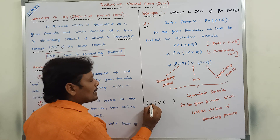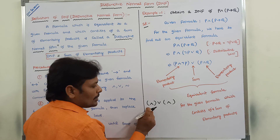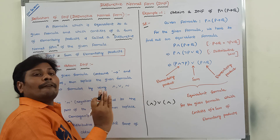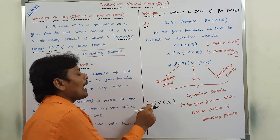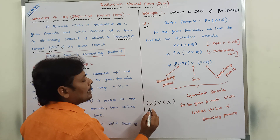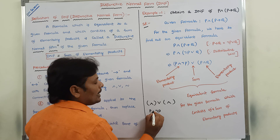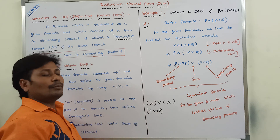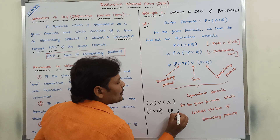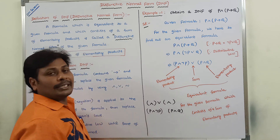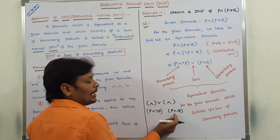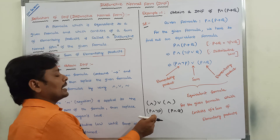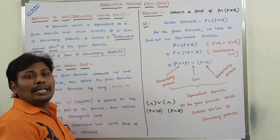An elementary product is nothing but variables connected by conjunction (AND) connectives. The AND connective is there in between the variables and their negations, and then it can be called as one elementary product. For example, P and ¬P — these two are connected by using the AND connective, so this is called as one elementary product. Similarly, P and Q — these two variables are connected by AND, so that is also one elementary product.